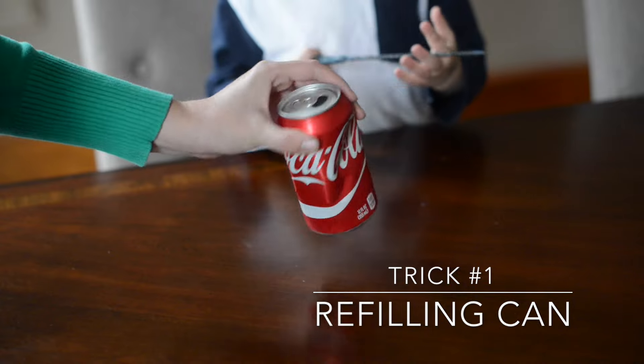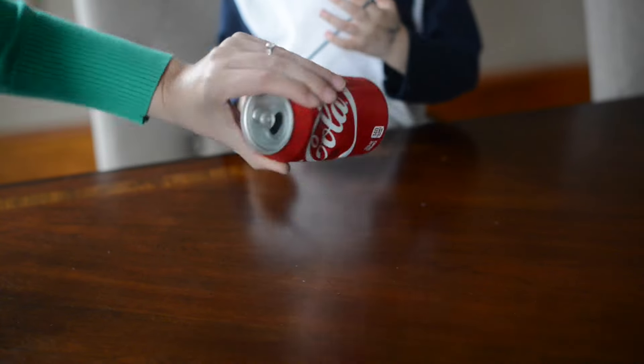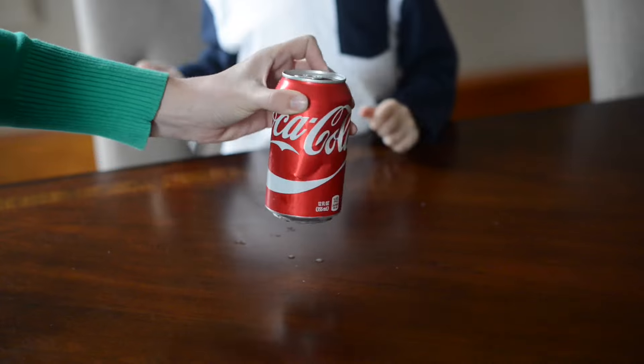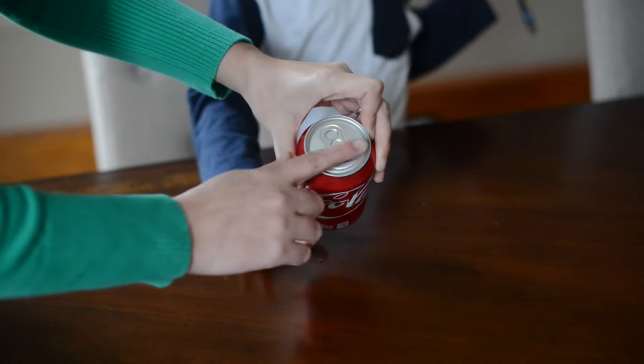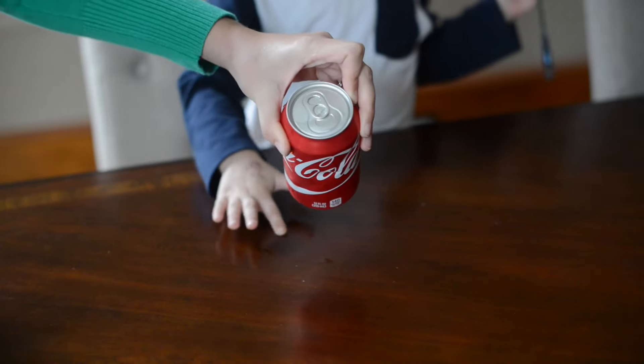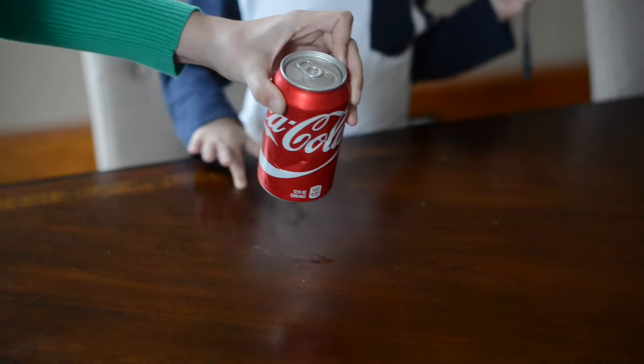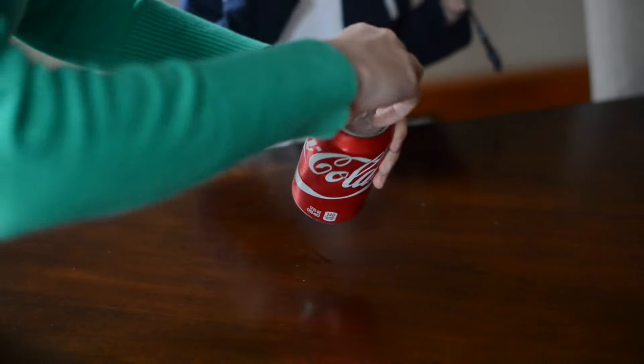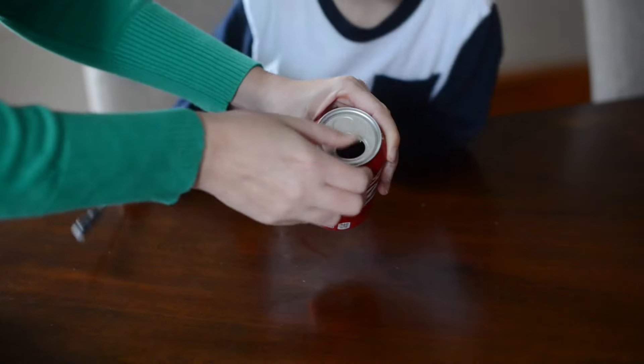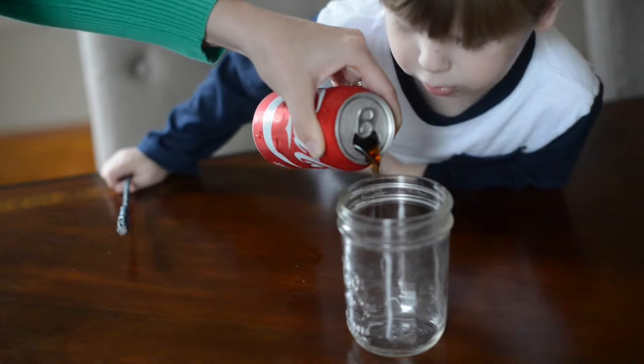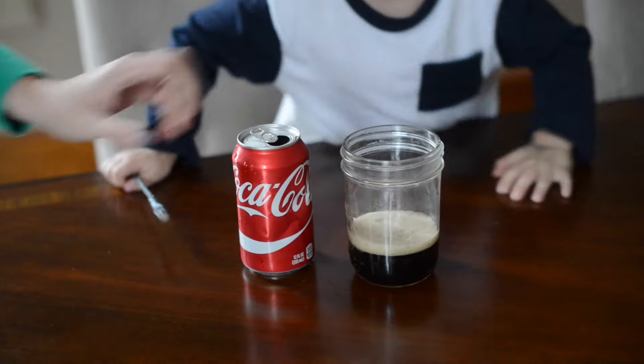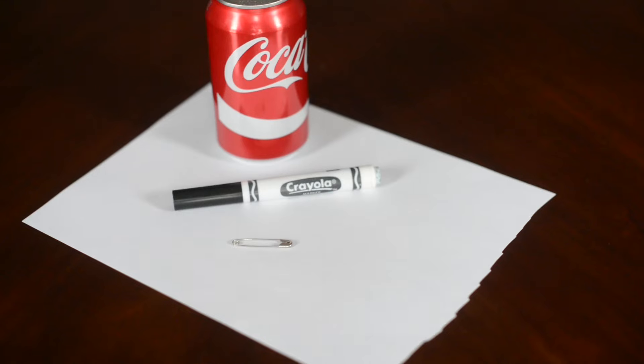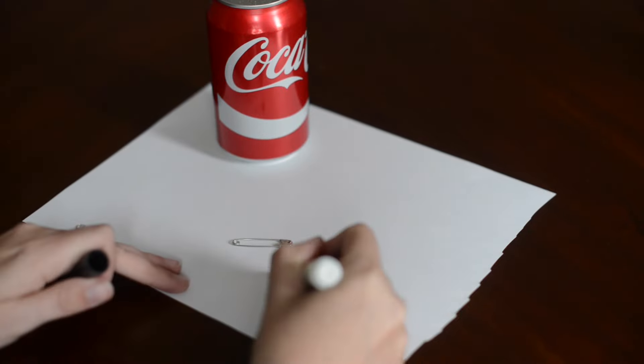Abracadabra. What you need for this is a pop can, black marker, safety pin, and some paper. Then you draw the shape of the opening on the pop can and cut it out.